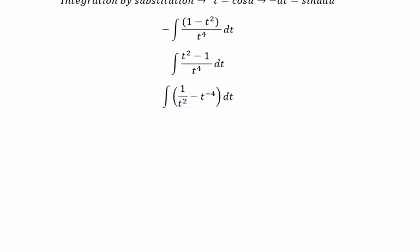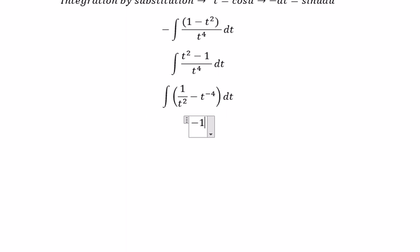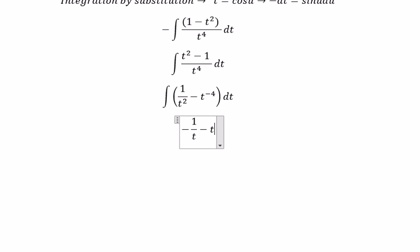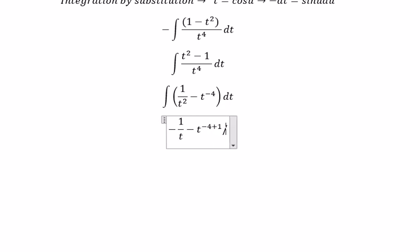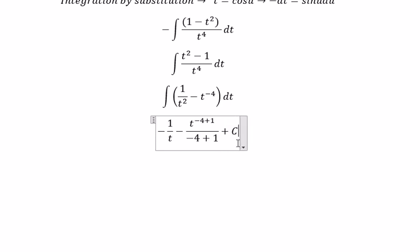Now we can find the final answer. The integral of 1 over t² gives negative 1 over t. The integral of t to the power of negative 4 gives t to the power of negative 4 plus 1, over negative 4 plus 1, which simplifies with exponent negative 3. We add the constant c.